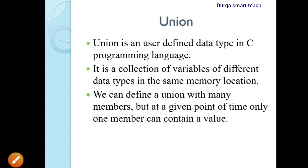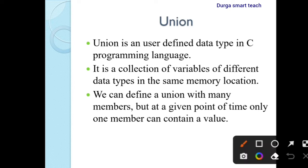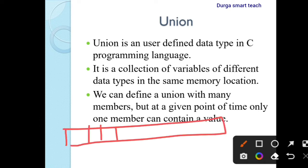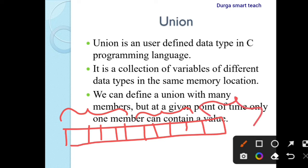Whenever you declare a structure using the struct keyword, you can declare integer, character, float, double — those are different data types. When you define these different types, memory is allocated: 4 bytes for integer, 4 bytes for float, 2 bytes for character. So memory is allocated for 3 different data types: int, float, and char. This is structure.